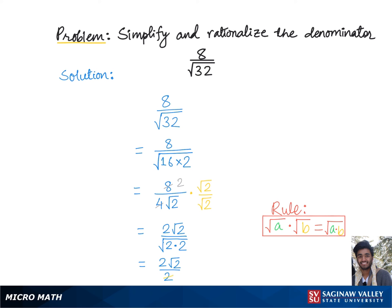Now these two cancel each other out since one is in the denominator and other in the numerator, so we are left with square root of 2 which is the final answer.